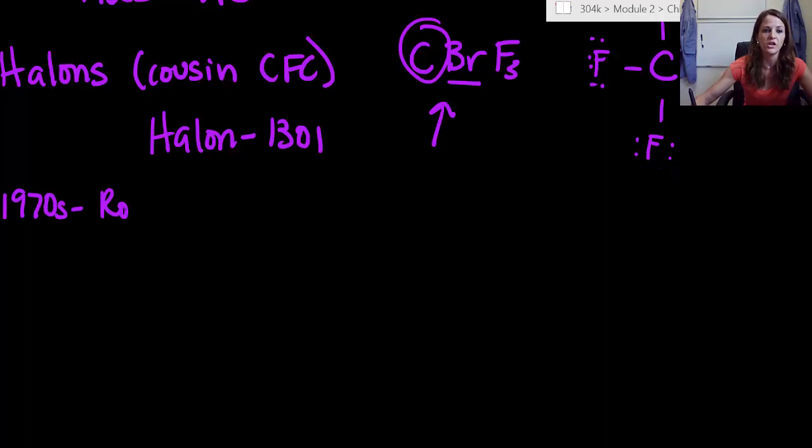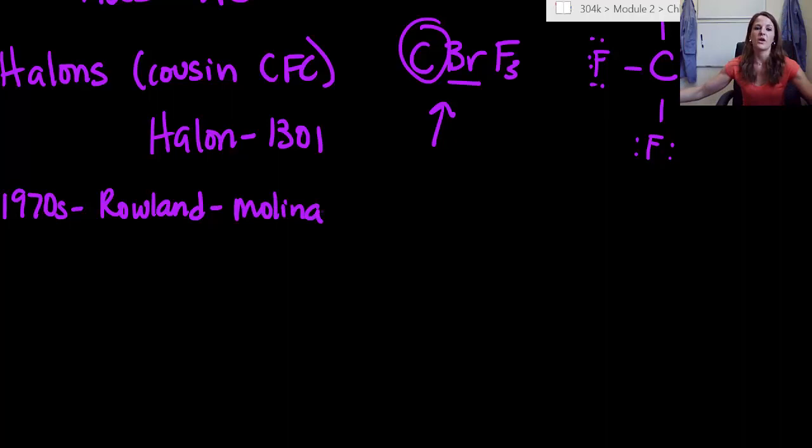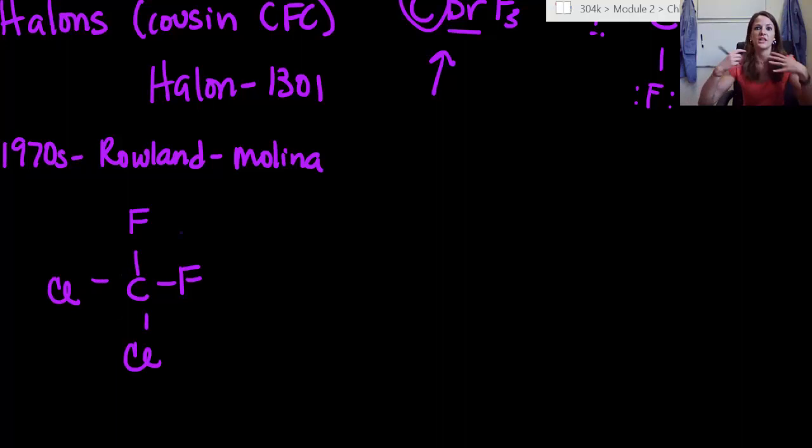So now we move to the 1970s. In the 1970s, there were these two really awesome people, Roland and Melina. Now, what they did is they were like, what do you think happens when we take Freon 12? Okay, so that has two fluorines on it and two chlorines on it. This was Freon 12. What happens when we shine light on it?